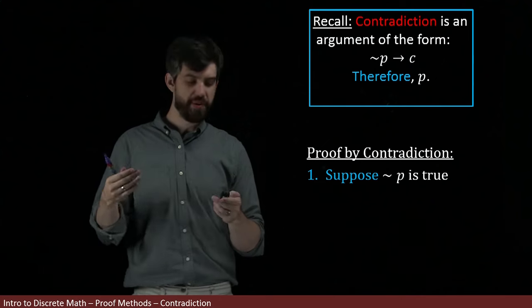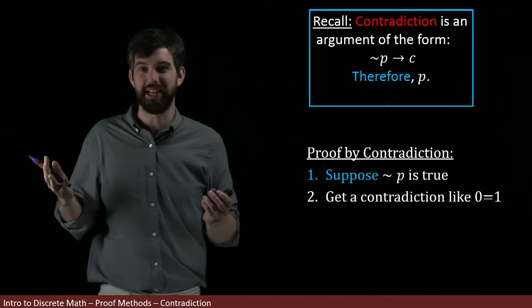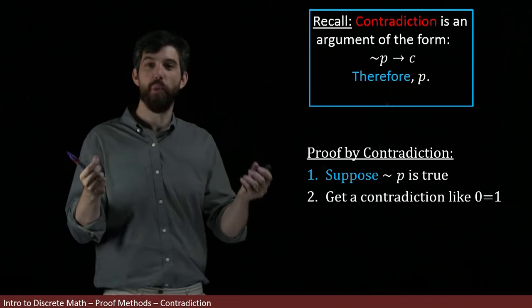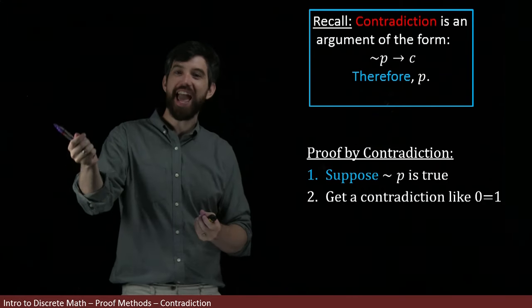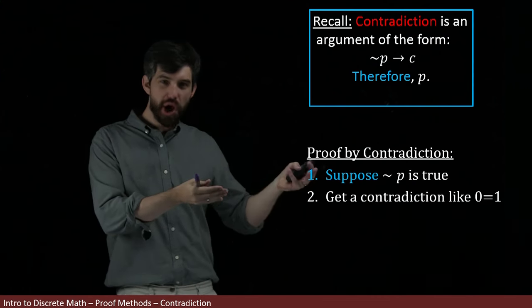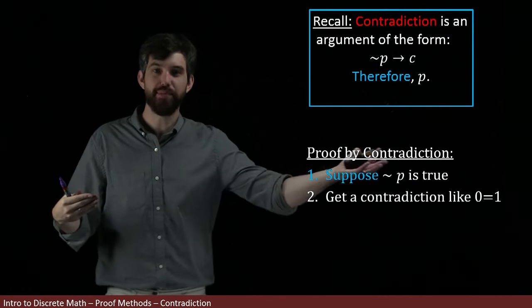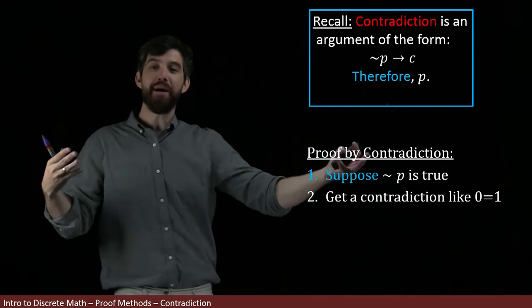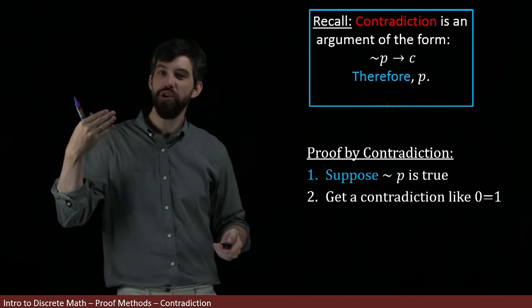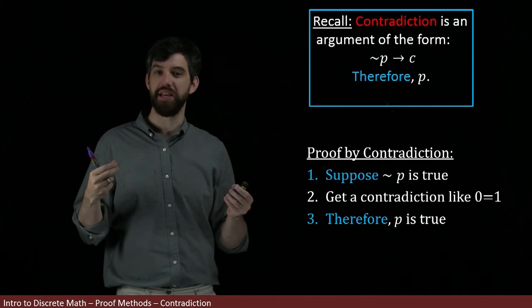And then I'm gonna do a bunch of manipulations and along the way I'm hoping to get to some pure nonsense. I mean like zero is equal to one or that Rufus is a dog and not a dog. Something that makes no sense at all. And because of the contradiction, it must be that my assumption, my assumption of not P, that that must be false. And if not P is going to be false, then I'm going to have that my P is going to be true.